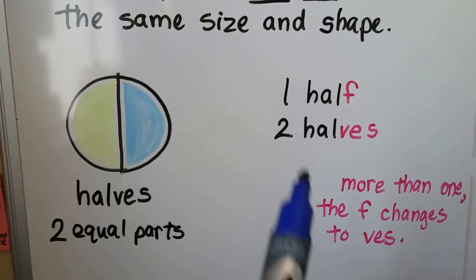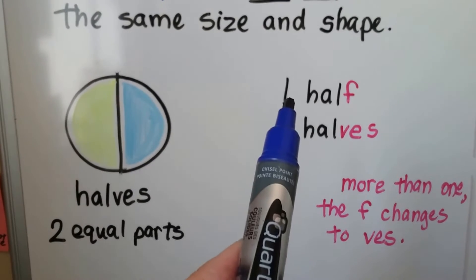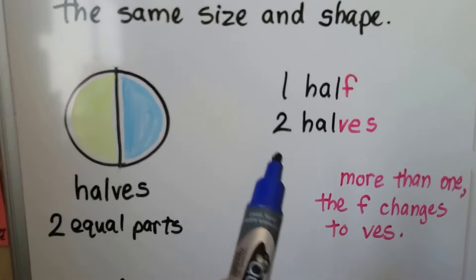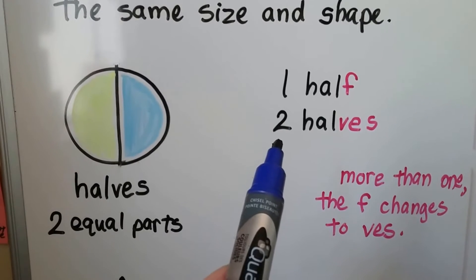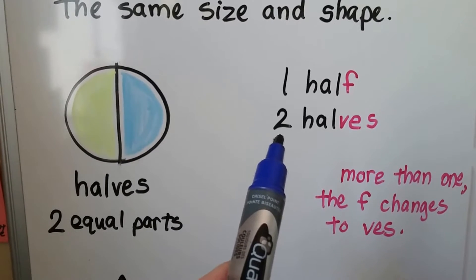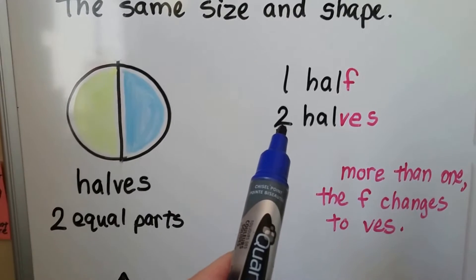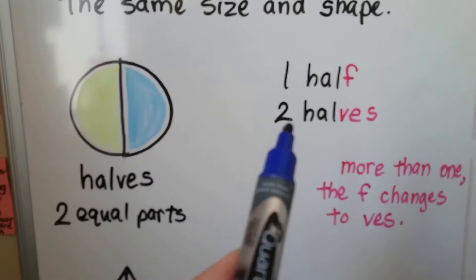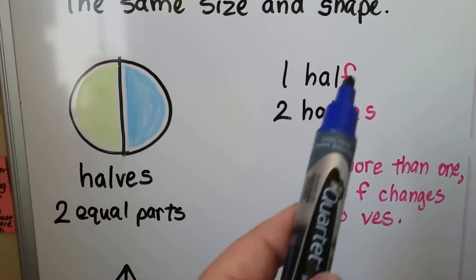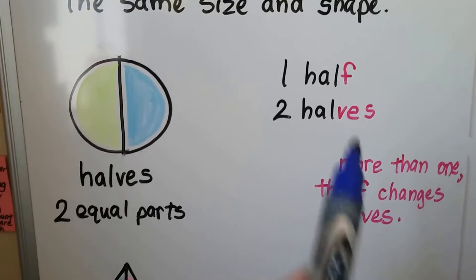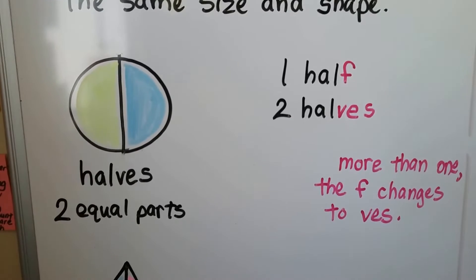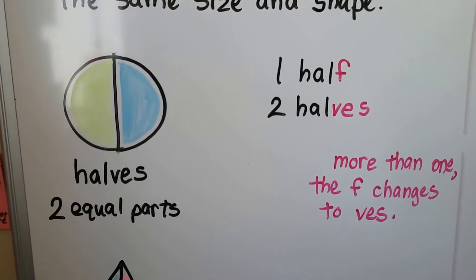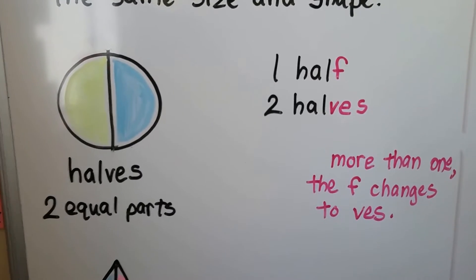You have to pay attention: when there's one half, it's spelled with an F. When it's plural — more than one, like two or three or four — the F turns into VES and we say halves.